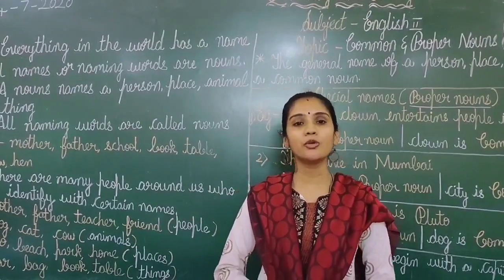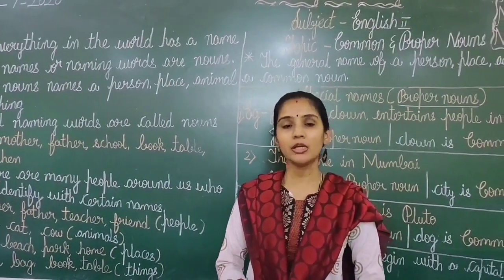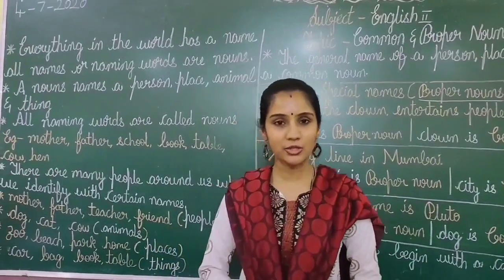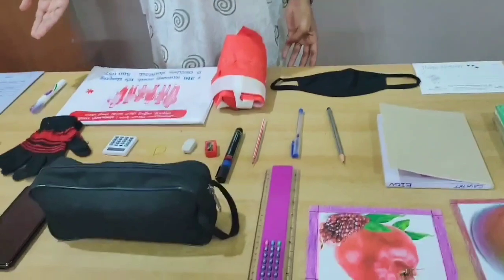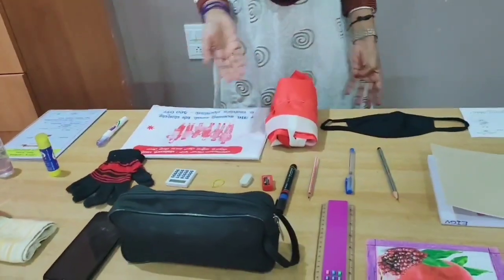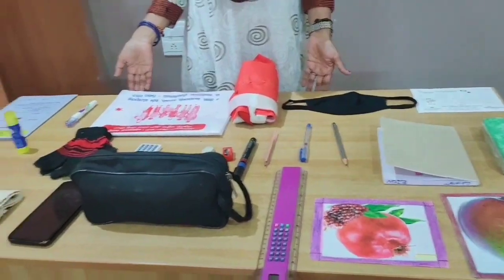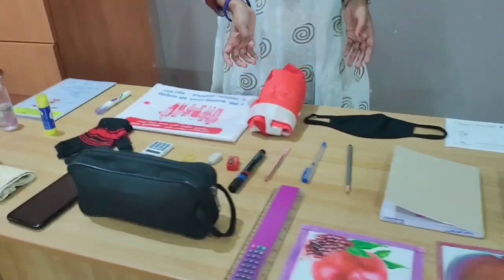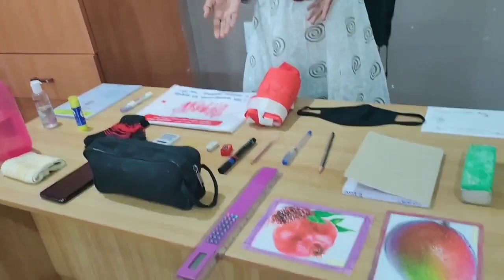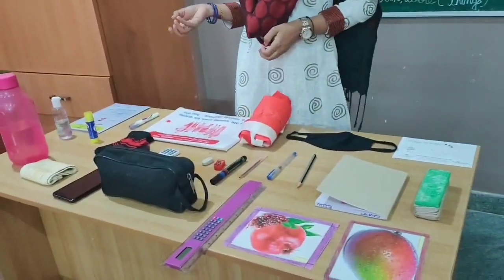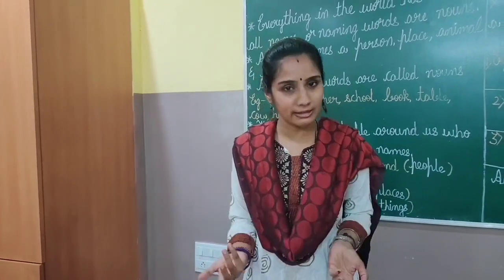Okay children, today I am going to start with a new lesson. Before that, let me show you some things. Here you can see many things on the table. You will be able to identify them only by their names. Without the name, you won't be able to identify anything.